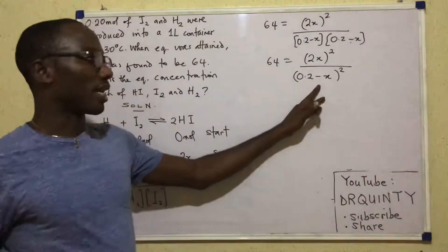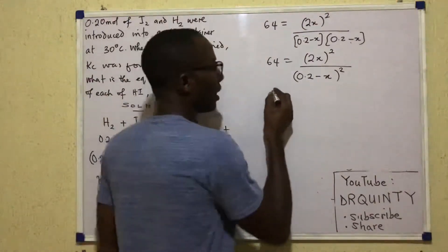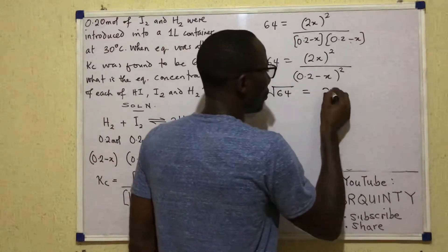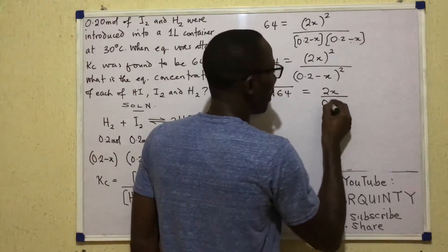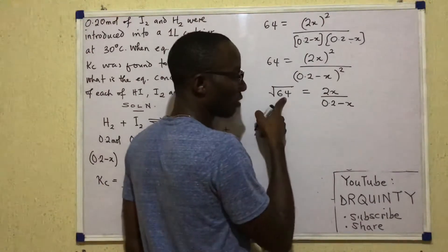At this point, I can take the square root of both sides. So taking the square root of both sides means I'm going to write root 64 is equal to 2X over 0.2 minus X. Root 64 is 8.